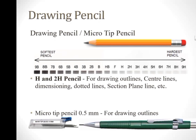The first one is the drawing pencil. There are different grades of pencil. According to the grade, the pencil is soft or hard. If we consider HB as the reference grade, moving towards the right-hand side the pencil gets harder, releases less lead, and the shade becomes lighter. Moving towards the left-hand side, the pencil gets softer, releases more lead, and the shade gets darker.